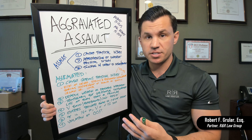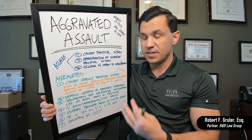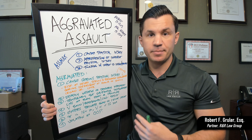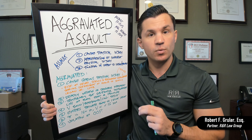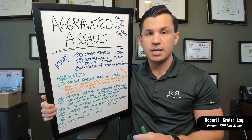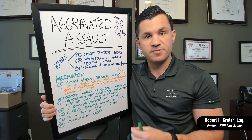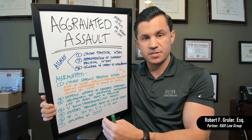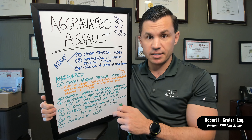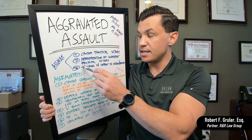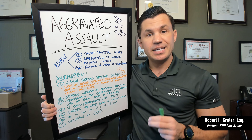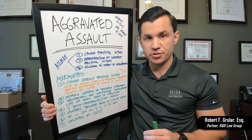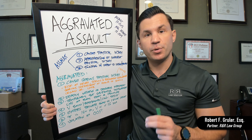Aggravation means it gets worse — it's taking it from a lower-level offense and making it a lot more severe, elevating it from a simple misdemeanor up into a felony. It's a regular assault plus some other factors that aggravate it. If you want to look this up, regular assault is 13-1203, and aggravated assault is just one statute down: 13-1204.